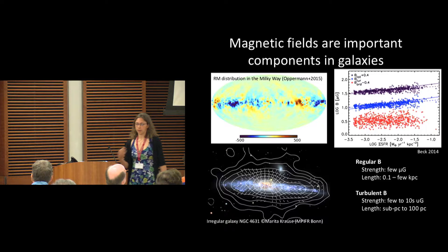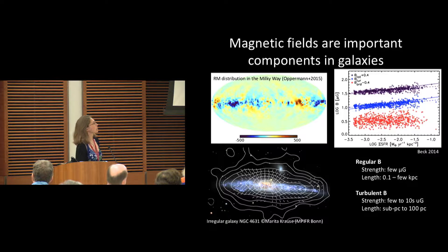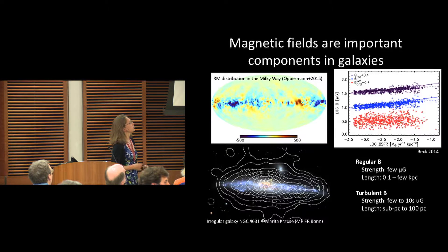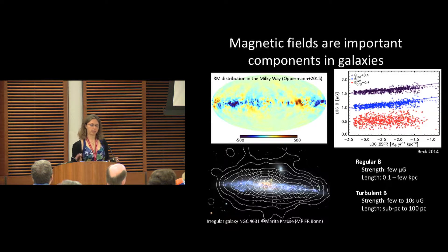We can look at the total magnetic field when we look at the total non-thermal synchrotron emission, and when we look at the polarized synchrotron emission, we can get a sense of the plane of sky, larger coherent magnetic field.